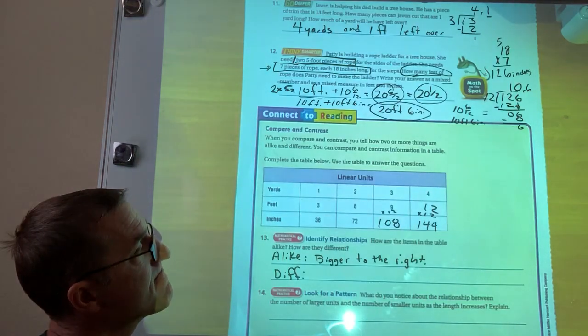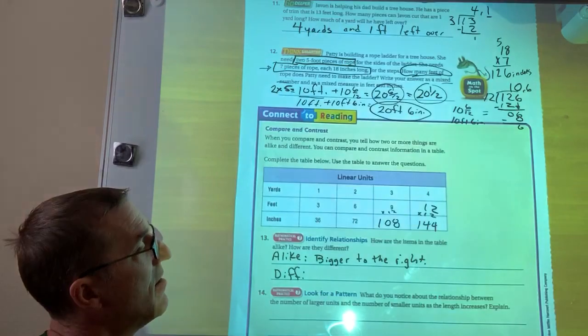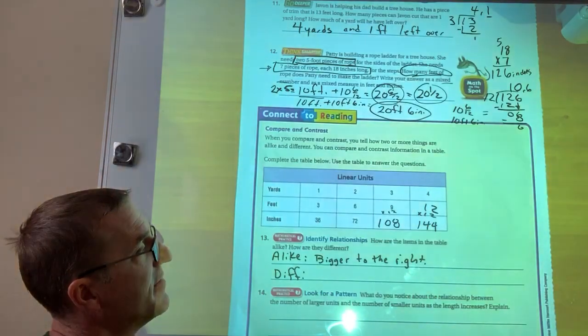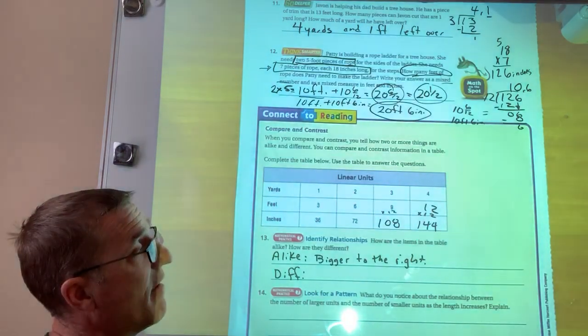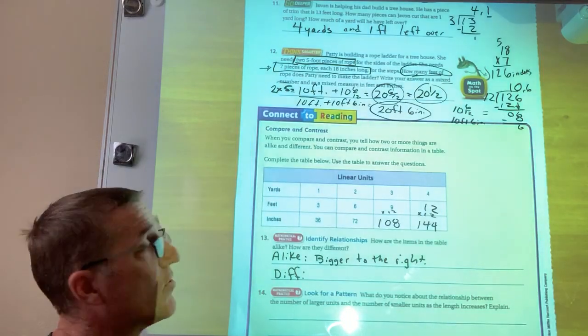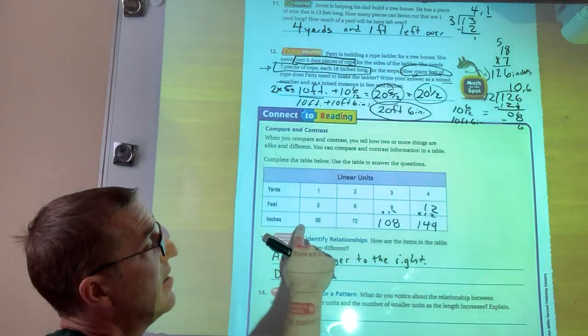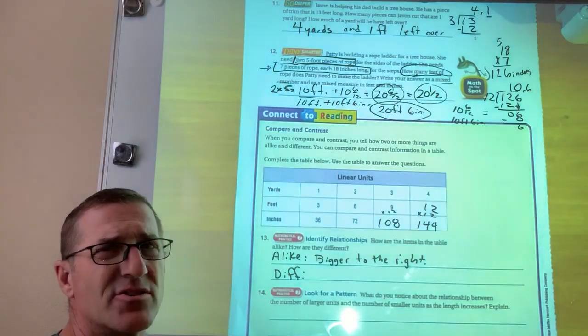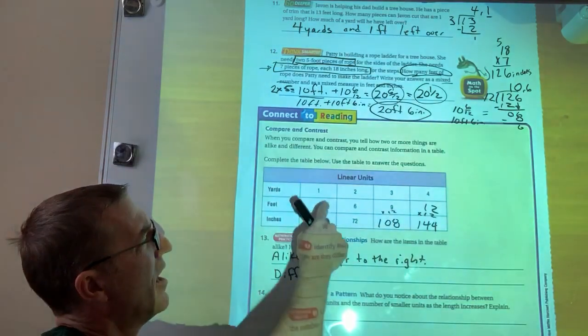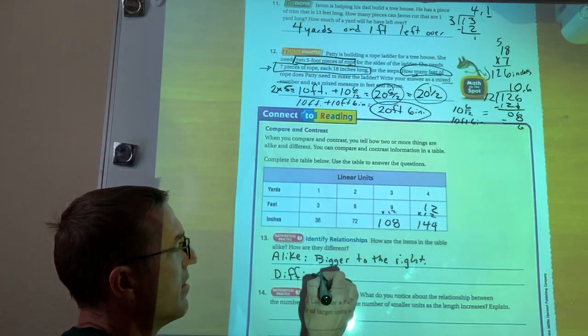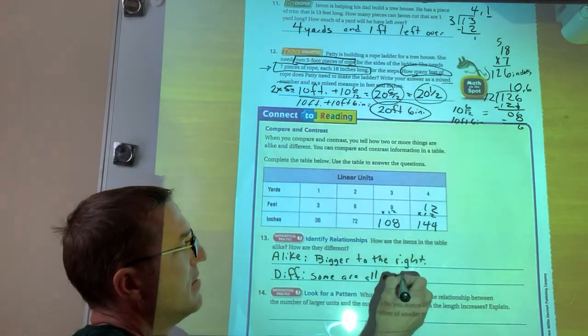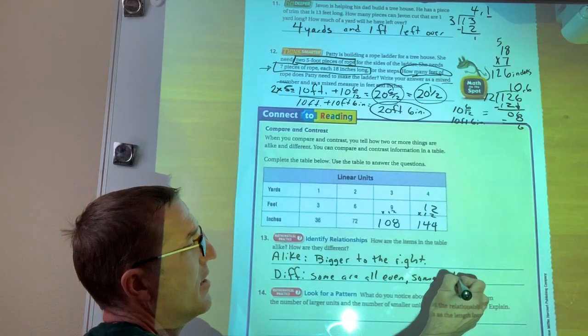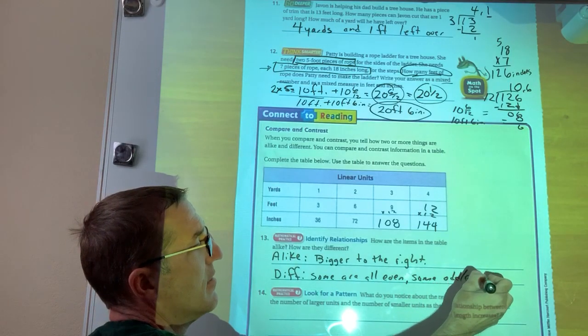It looks to me also like how they're different is that they, some are all even and some are odd and even. So I look at inches 36, 72, 108, 144. All of those are even and I got odd, even, odd, even. So some are all even, some odd, even. Right.